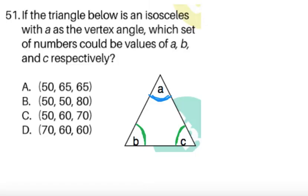For item 51, if the triangle below is an isosceles triangle with A as the vertex angle. So, if A is the vertex angle, it means that it's the angle where the two congruent sides meet. Since, in an isosceles triangle, there's a pair of sides that is congruent. These two sides meet at this vertex. So, it's called the vertex angle. So, which set of numbers could be the values of A, B, and C, respectively? Now, if A is the vertex angle, the other two angles are called the base angle. So, by the isosceles triangle theorem, these two angles, B and C, should be the same.